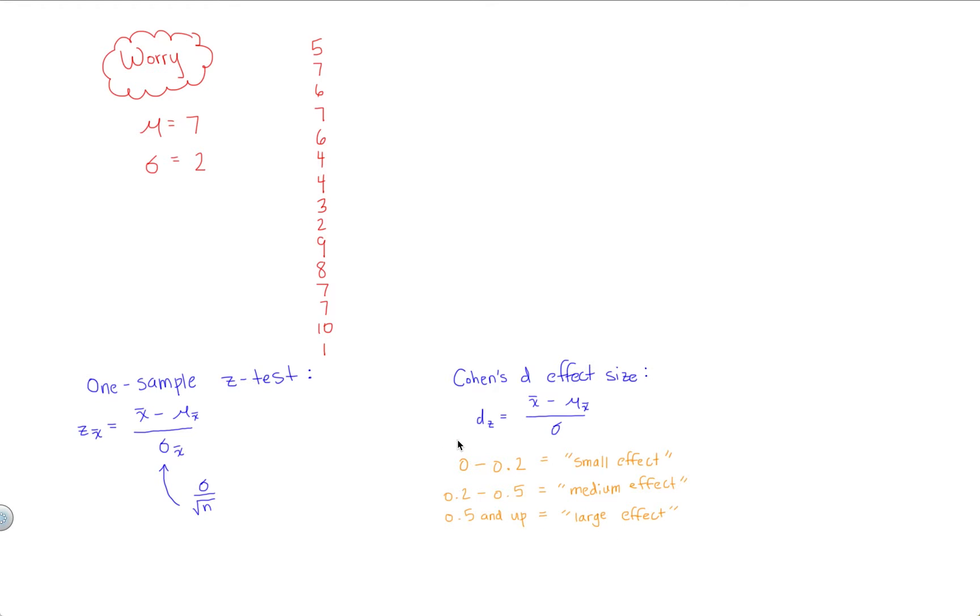By the way, it works in the negative direction too. You might get negative effect sizes. It just depends on whether the sample mean is larger than your population mean or if it's smaller than your population mean, but it's perfectly possible. So it works the same way. 0 to negative 0.2 will be considered a small effect. Negative 0.2 to negative 0.5 is a medium effect. And anything more negative than negative 0.5 would be a large effect.